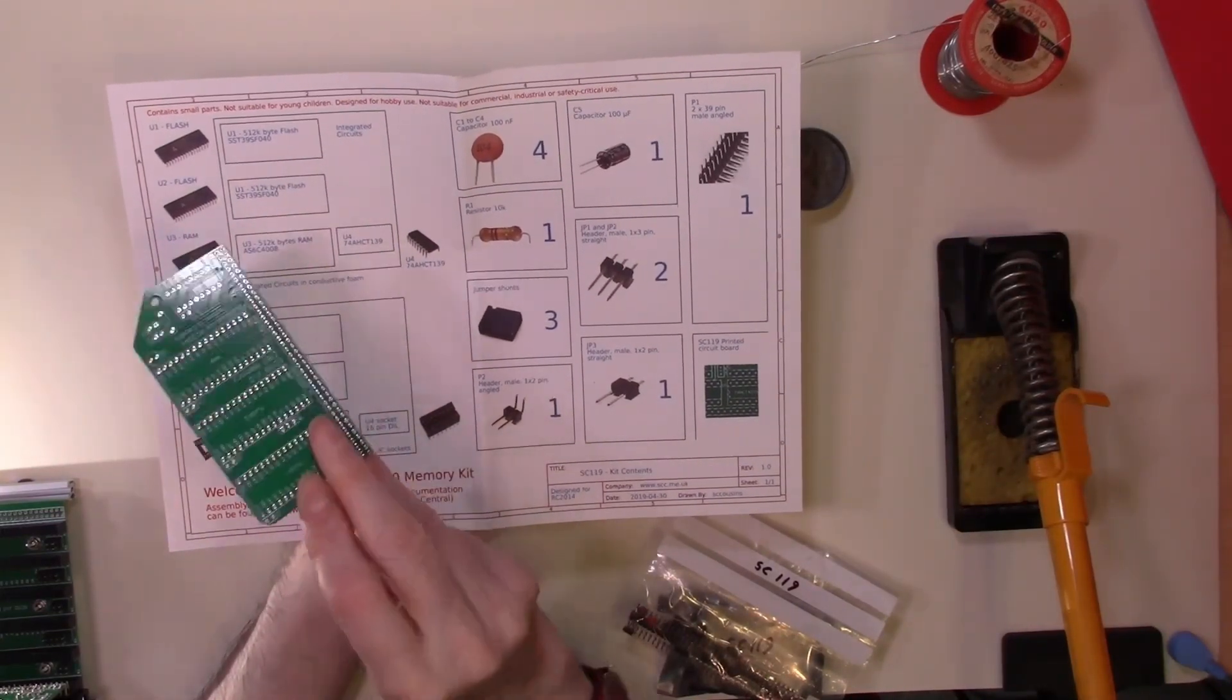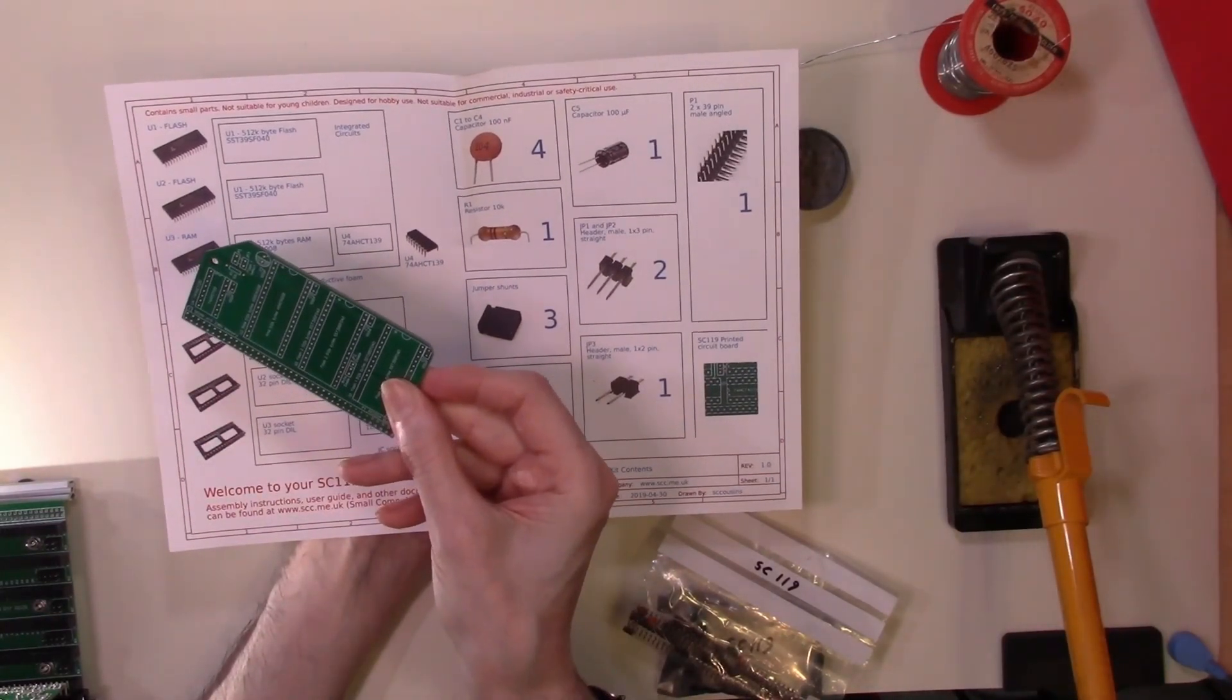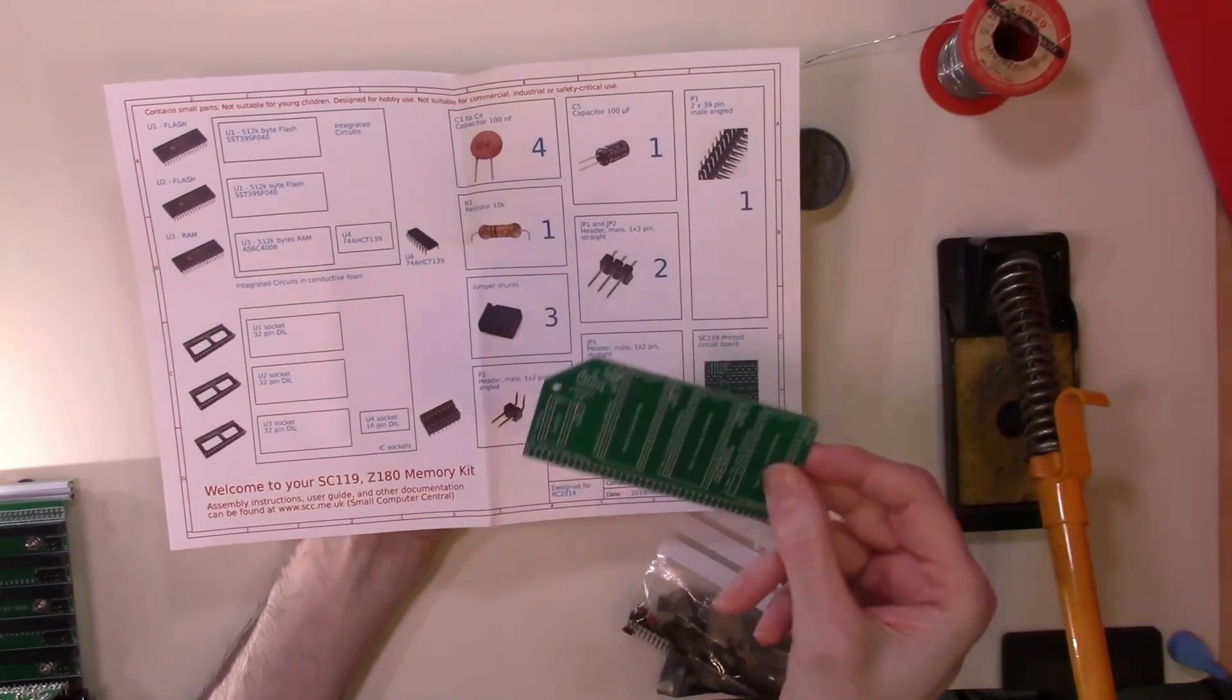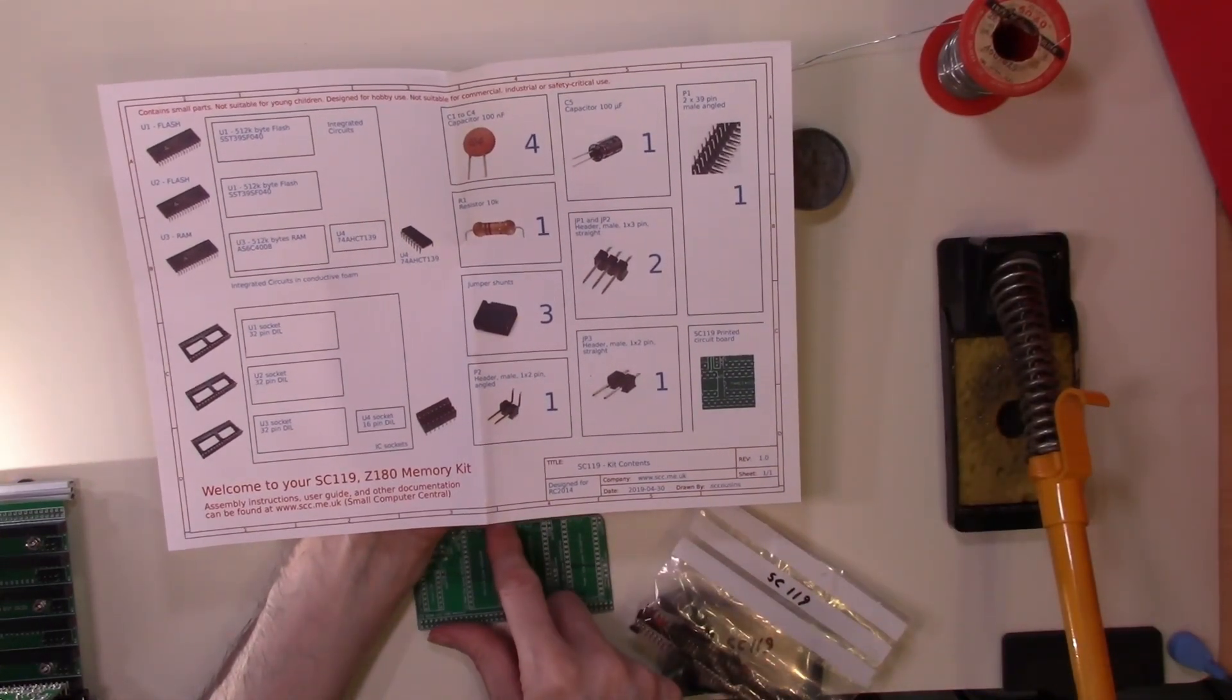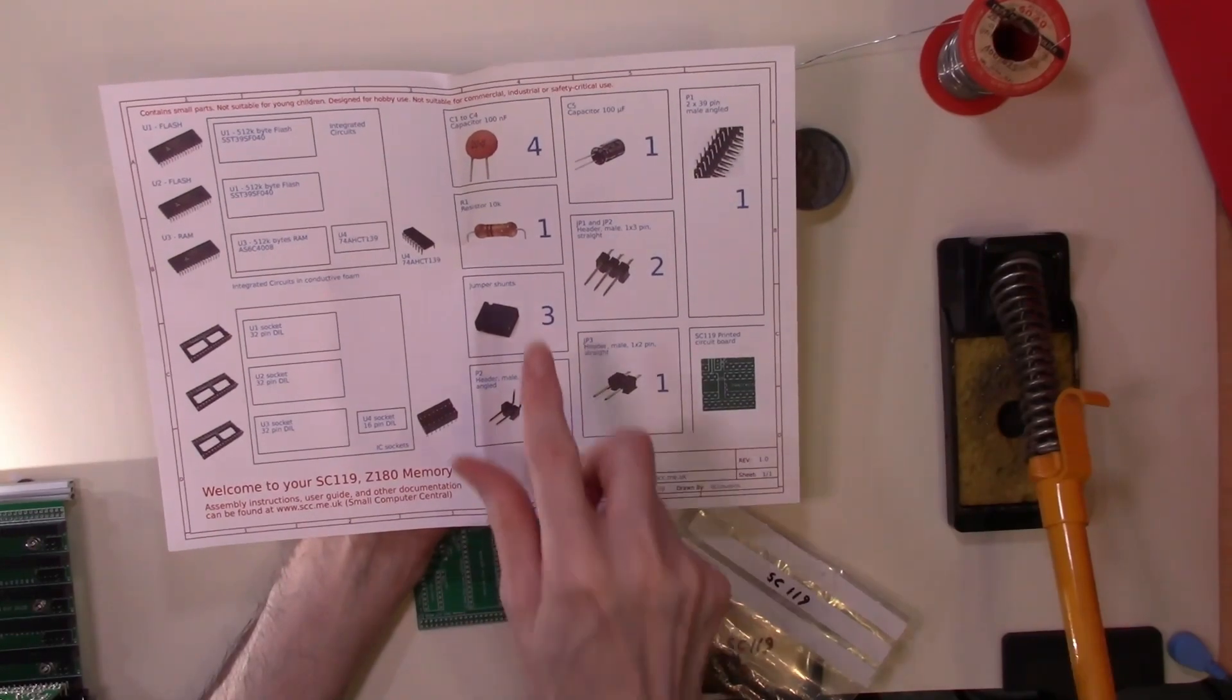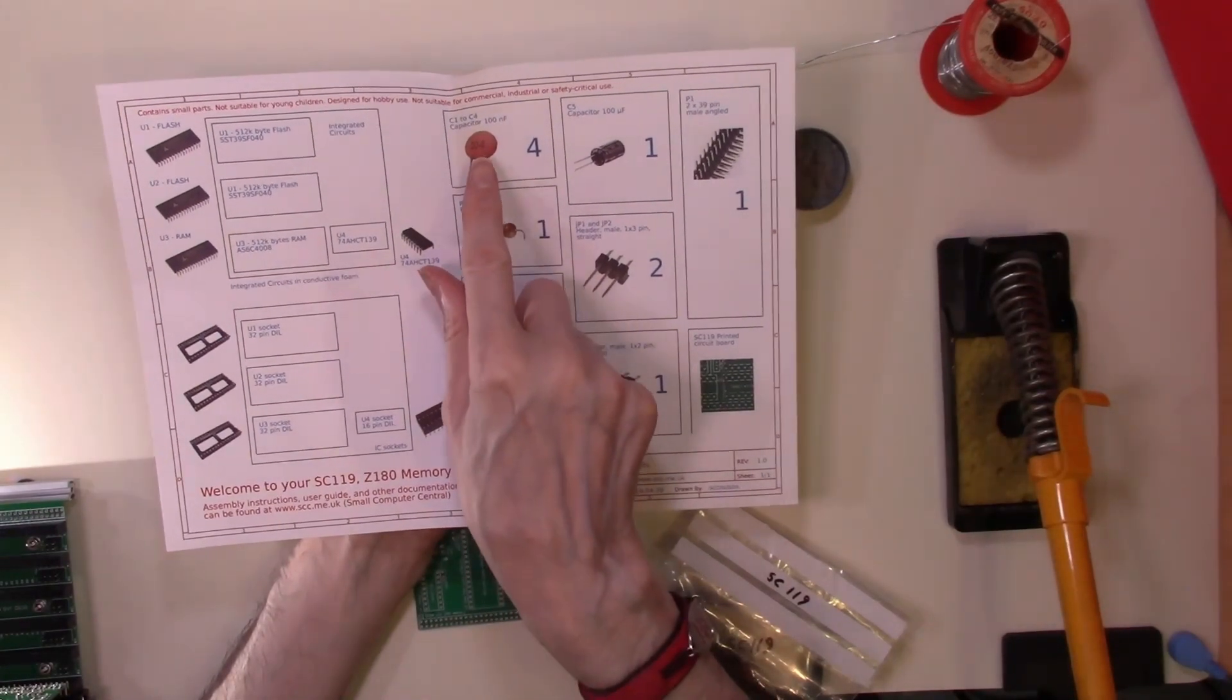As always, we will start with the lowest profile components first. In this case we have a resistor, four of these capacitors, and a single other capacitor to put in. So we'll put those in first.